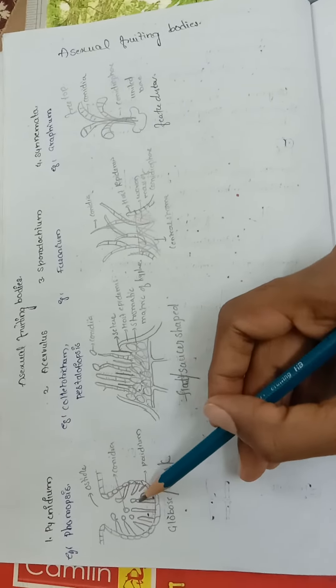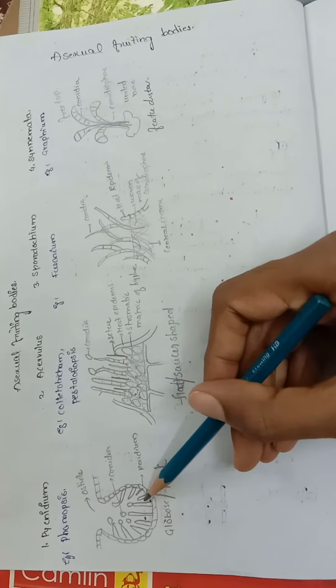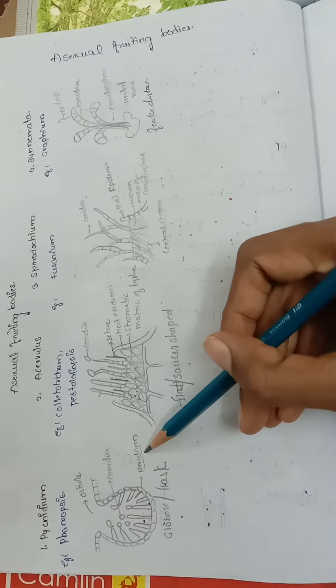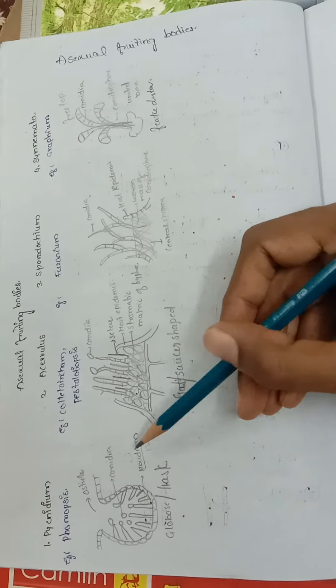Peridium is a pseudoparenchymatous tissue of the plant, and the conidiophore produces the conidia.